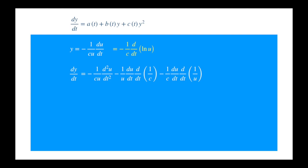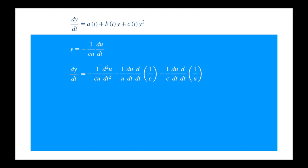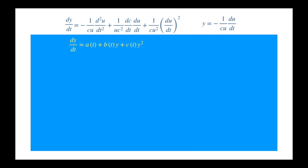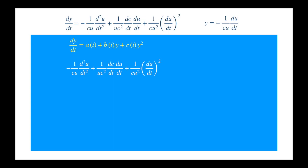Let's calculate the derivative of the transformation, where we apply the product rule to a product of three terms. First apply the product rule to uv times w, and then apply the product rule to u times v. In our equation, 1 divided by c, 1 divided by u, and du/dt are the three terms. Now we can apply the chain rule to the derivative of 1 divided by c, and the derivative of 1 divided by u. Essentially the derivative of 1 divided by u is equal to minus 1 divided by u squared. Now we can combine the du/dt factors in the last term.